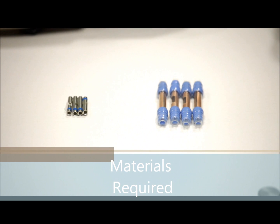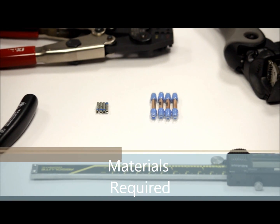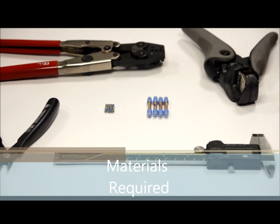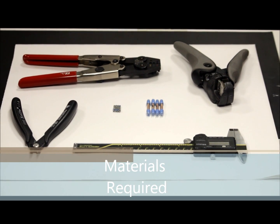Materials Required: Select the appropriate size heatless crimp splice. Use a standard M22520 crimping tool specified by AS81824. No new tooling is required.